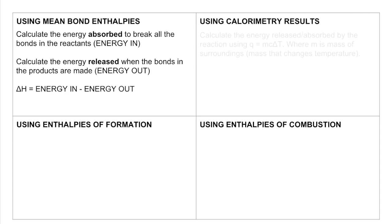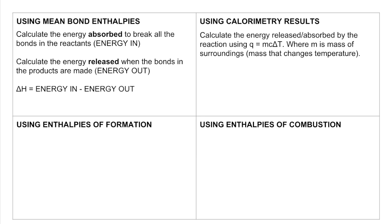Using calorimetry results now. So the first thing we need to do is calculate the energy released if the reaction is exothermic or absorbed if it's endothermic using the Q equals M C delta T expression. And the most common mistake I see is the incorrect use of M. M is the mass of the surroundings. So if, for example, an alcohol is being burned to heat up some water in a metal calorimeter, the M would be the mass of the water that's in the beaker. Just think of it as the mass of the substance whose temperature gets changed by the reaction.